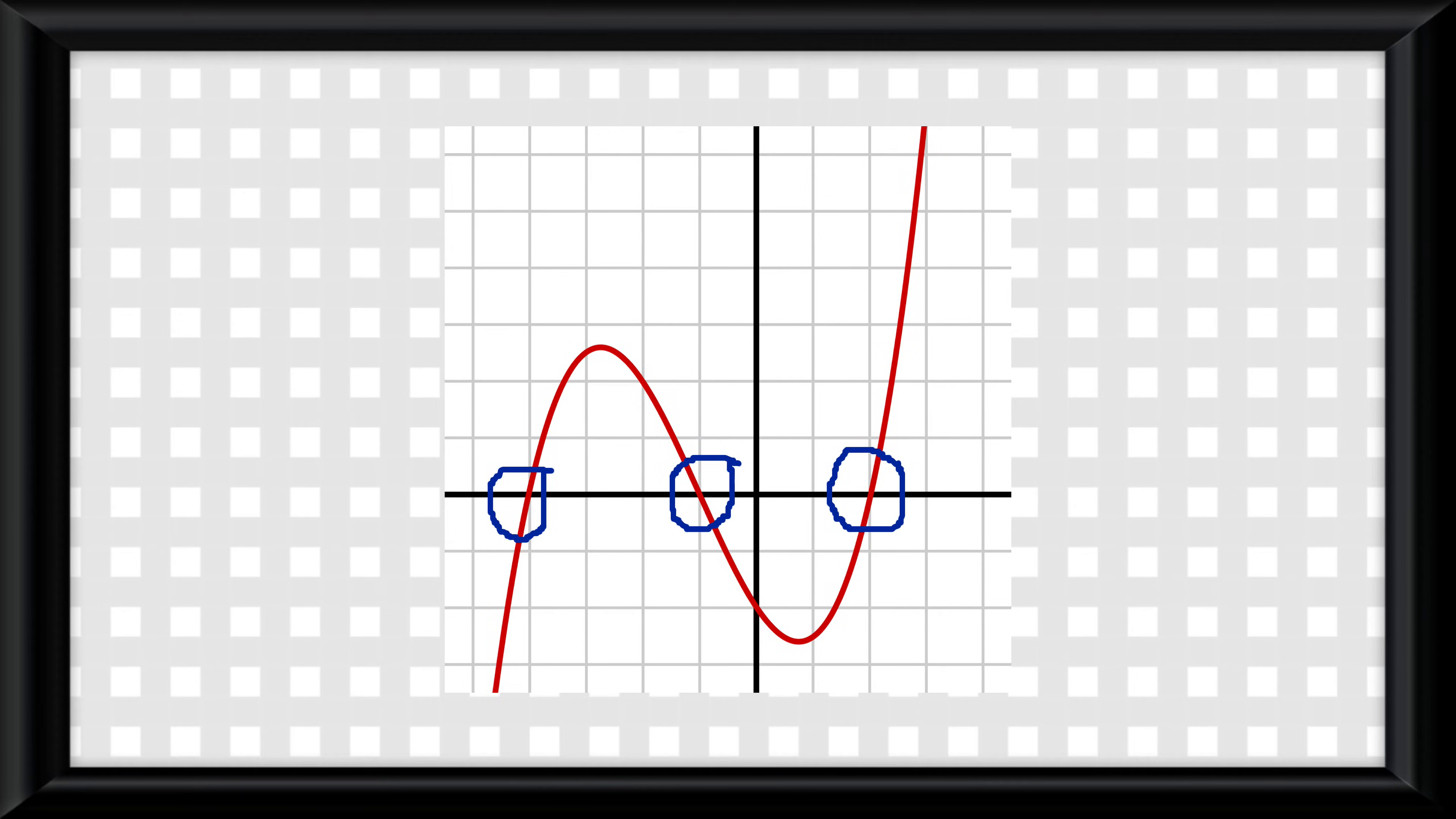The thing about zeros is they can be real or imaginary. If a zero is actually shown on a graph, you know it's real. Some zeros need to be solved with the imaginary number i, which is equal to the square root of negative 1. Any solution with i in it is imaginary. Another word for real zeros are linear factors, and another word for imaginary zeros is complex zeros.